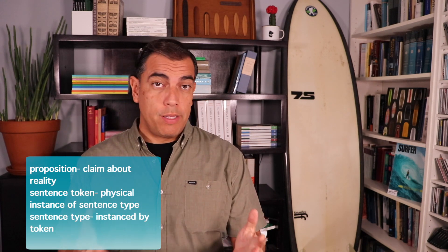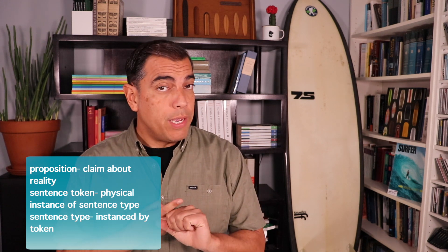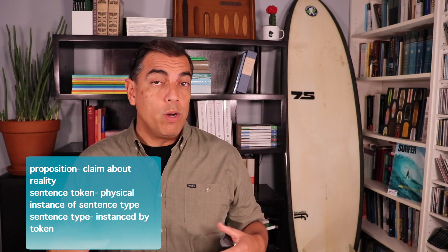We have three different things: propositions, which are claims about reality that can be true or false; sentence tokens, which are those physically written down or spoken sentences - they're instances of sentence types; and sentence types, which are instanced by the sentence tokens.